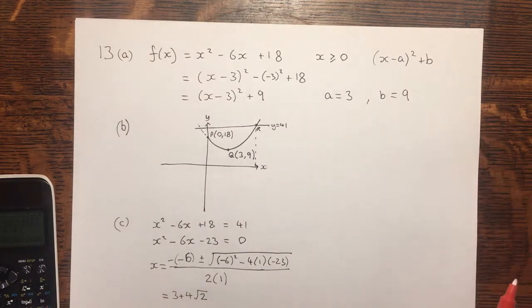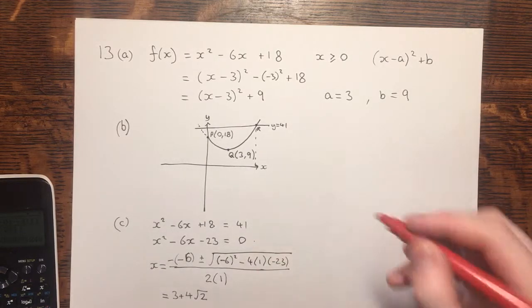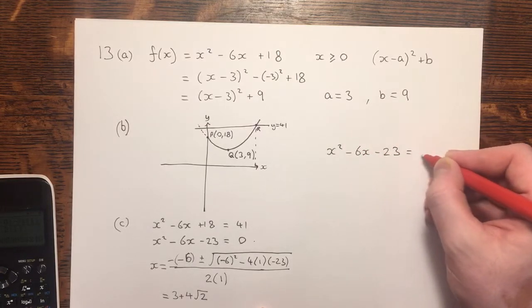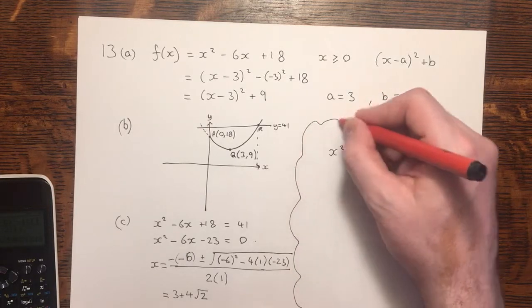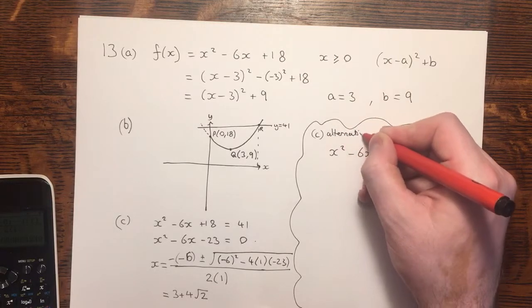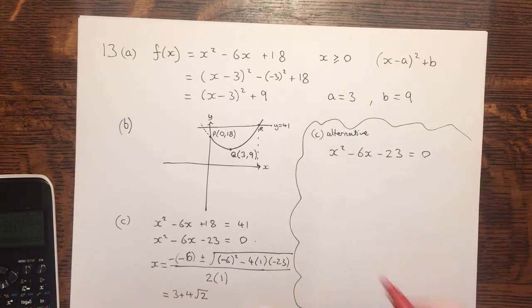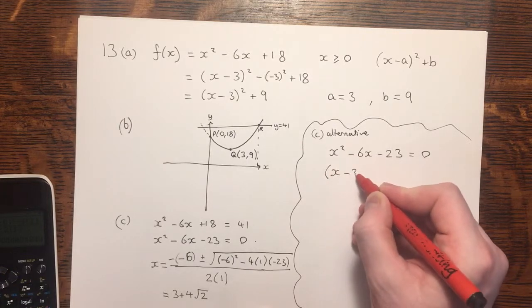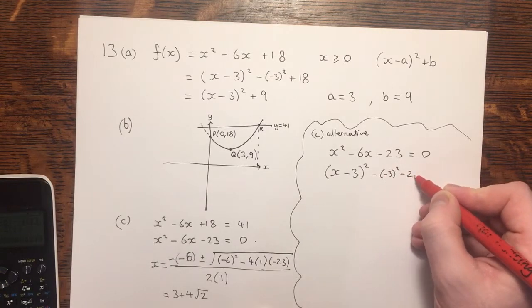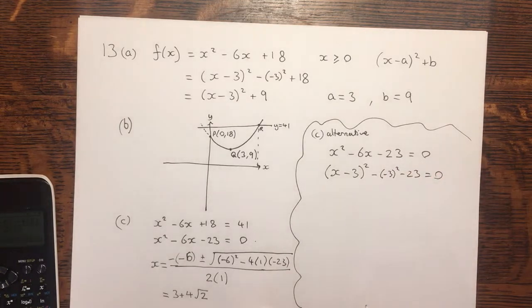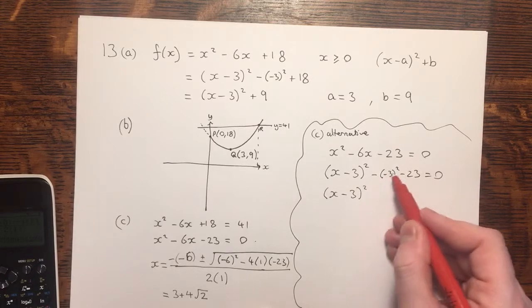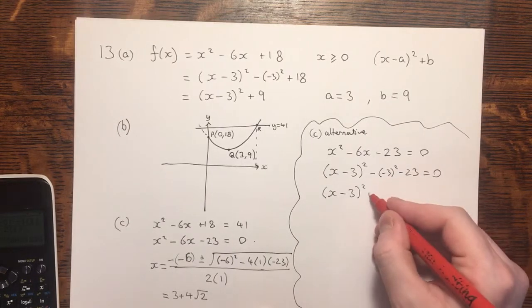But what was the alternative method? Well, that was completing the square. If I start from this point, x squared minus 6x minus 23 equals 0. Completing the square. And then tidying up. That would give me minus 9, minus 23, minus 32.